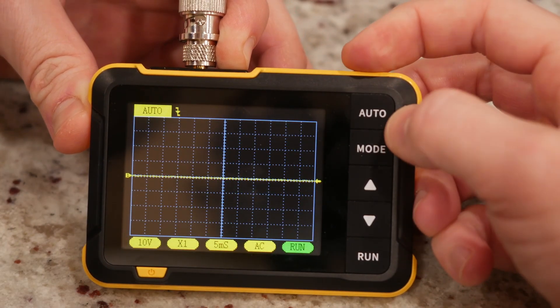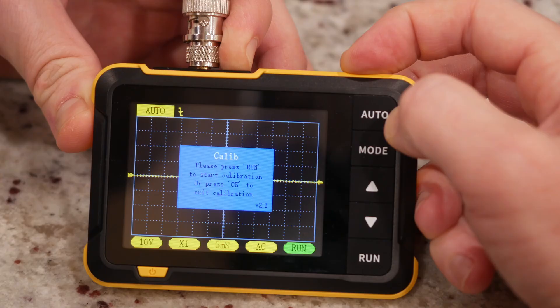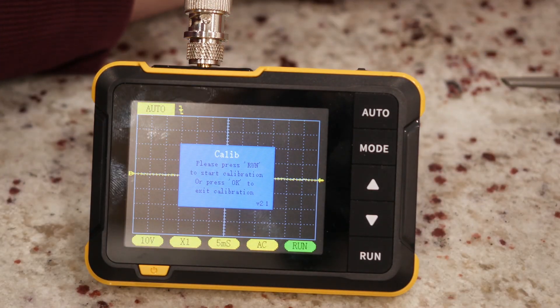We can set calibration up here. Do that by essentially shorting the probe and then letting it register zero voltage.